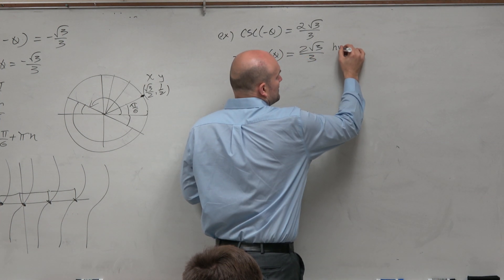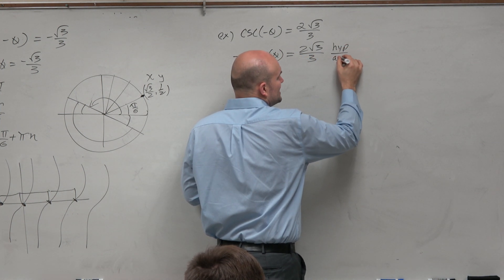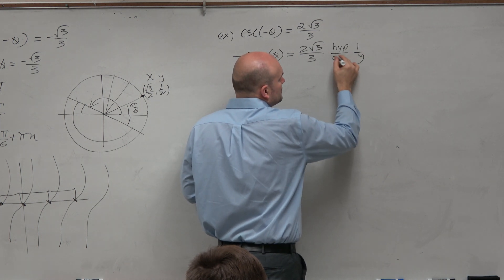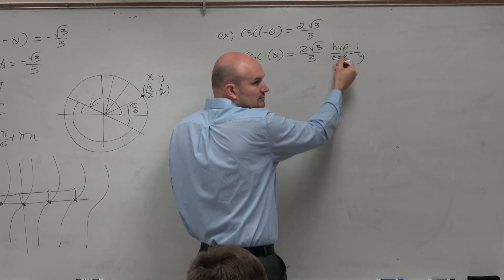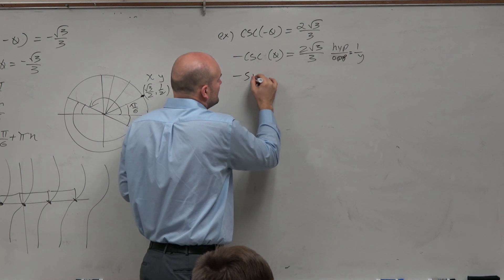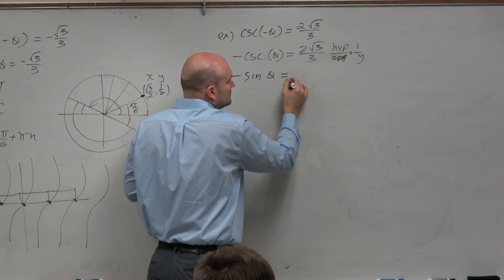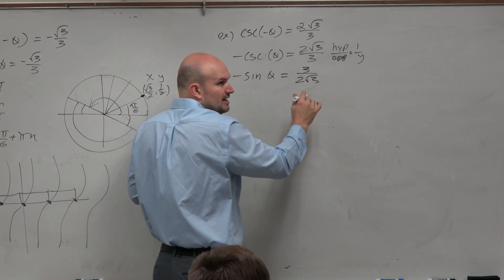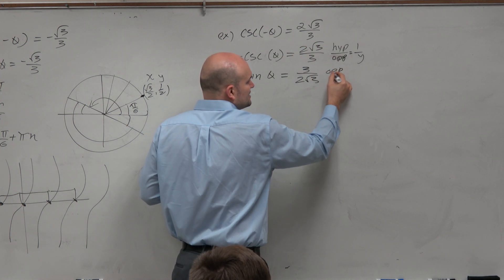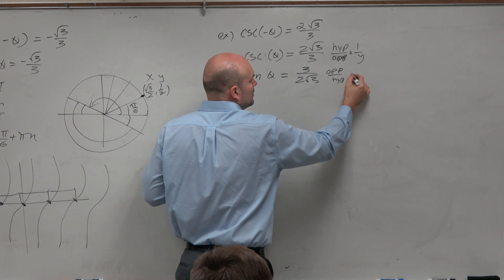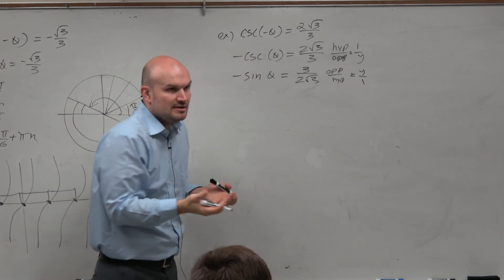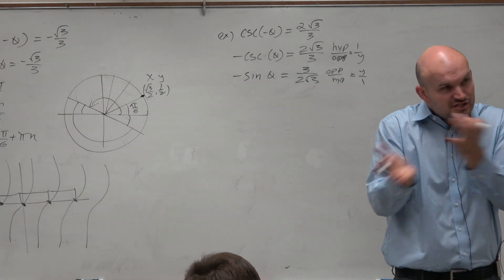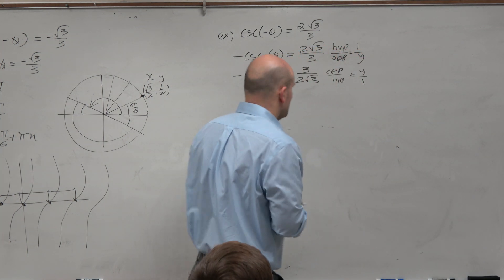If cosecant is hypotenuse over opposite, or 1 over y, right? Then sine of theta is 3 over 2 radical 3. Just the flipped, right? Because it's opposite over hypotenuse, or y over 1. Don't you guys agree? They're just reciprocals. So we've been practicing the reciprocals. They just flip them. That's it.